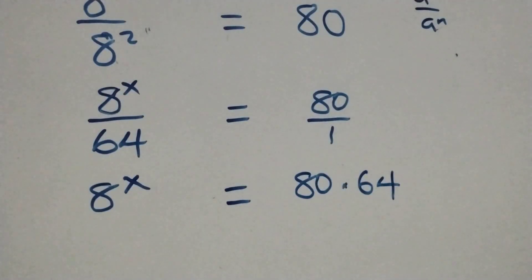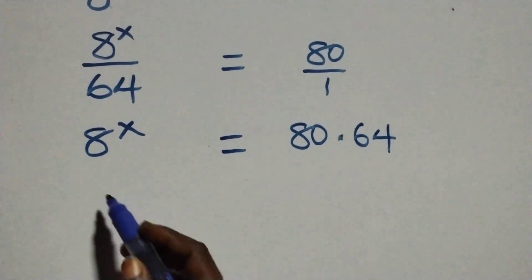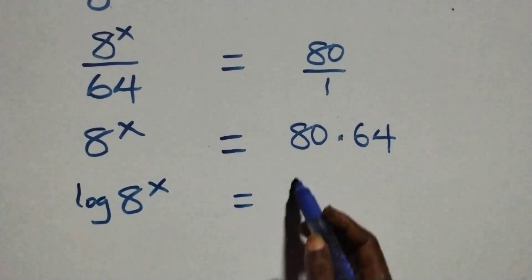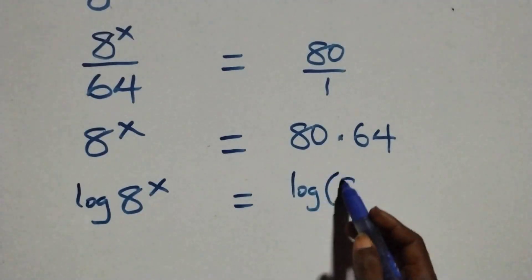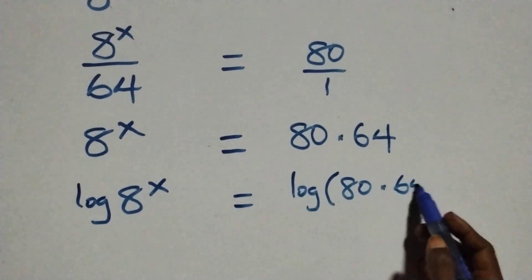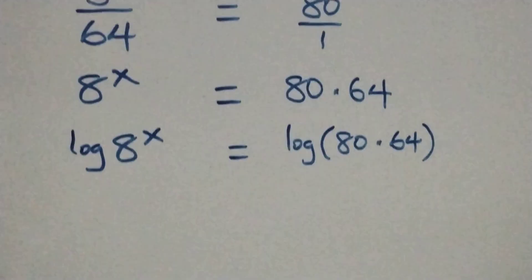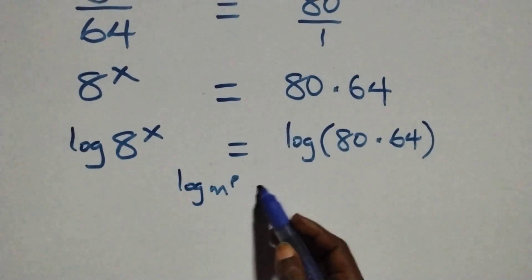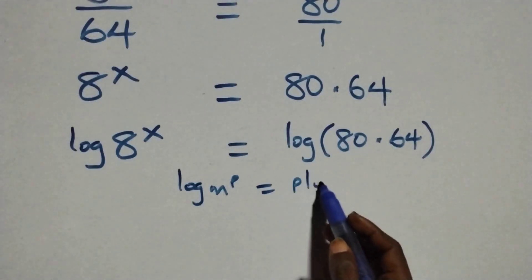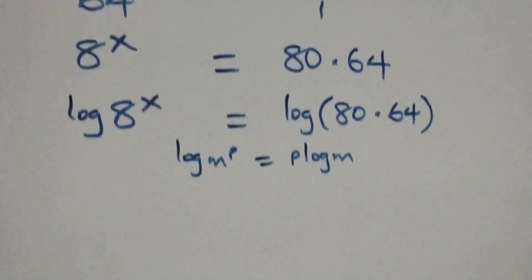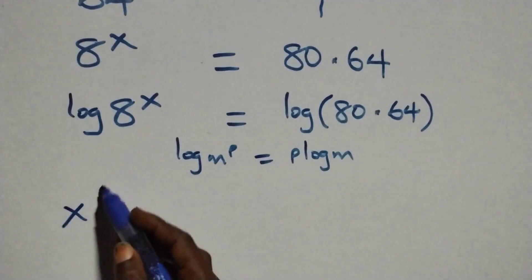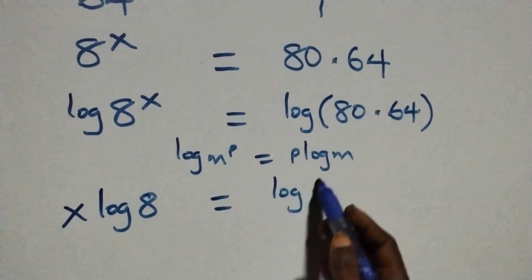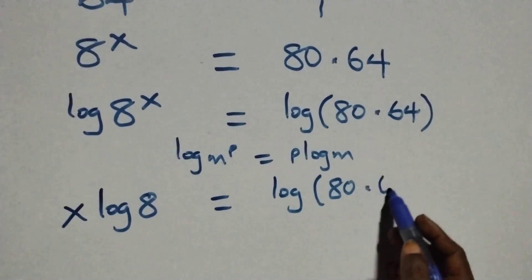The next step here, we take the log on both sides, and we have log 8 raised to power x equals log of 80 times 64. Then we apply the power rule of logarithms: when we have log m raised to power p, this is the same thing as p log m. So this becomes x log 8 equals log of 80 times 64.